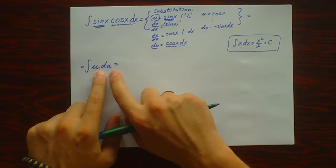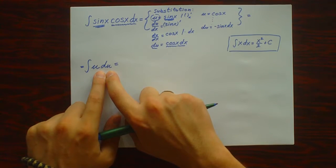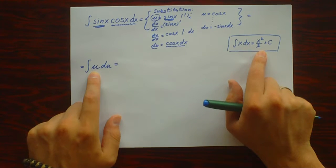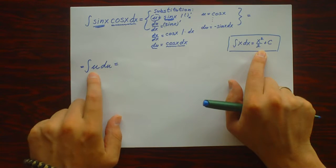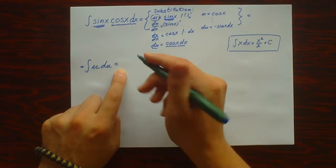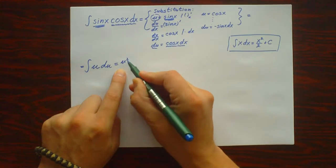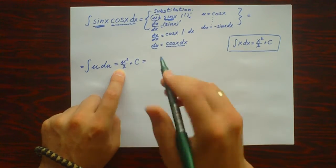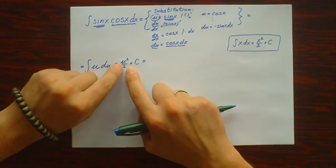We're going to solve this integral. Here we have the letter x in the formula, but here we have the letter u. So it will be the same formula, but with a different letter. So we will have u squared over 2 plus C.